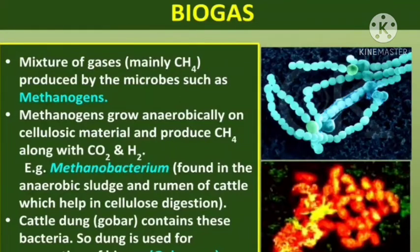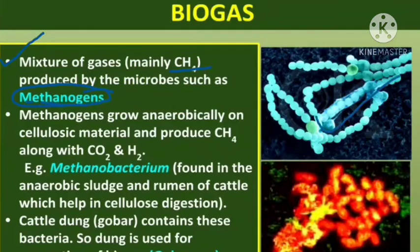Biogas is a mixture of methane which is produced by microbes such as methanogens. Now, what are methanogens? When we produce biogas, we use bacteria. These bacteria have the ability to grow anaerobically — meaning these bacteria do not require oxygen. Even lacking oxygen, they can reproduce. These bacteria grow anaerobically on cellulosic material and produce a large amount of methane.